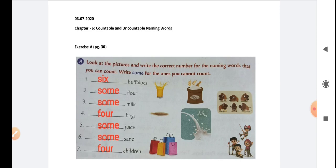Flour is an uncountable naming word, so we say some flour, and the spelling for 'some' is S-O-M-E. Question number three: dash milk. Now look at the picture. Can you count this milk? No, it's not possible, so we say some milk. Number four: dash bags. How many bags do you see?